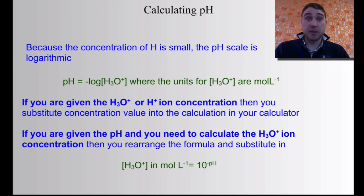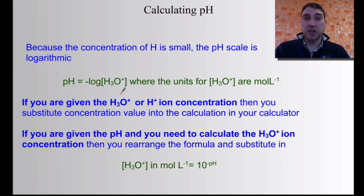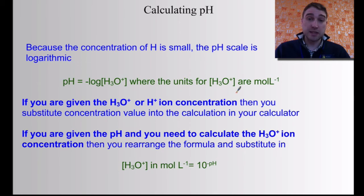So how do you calculate pH? The pH scale is based on a logarithmic scale, so it deals with really, really small numbers. The pH is equal to the minus log of the concentration of hydronium ions in the solution. The unit of the concentration of hydronium ions is moles per litre. The square brackets mean 'concentration of' — so concentration of hydronium ions in moles per litre.